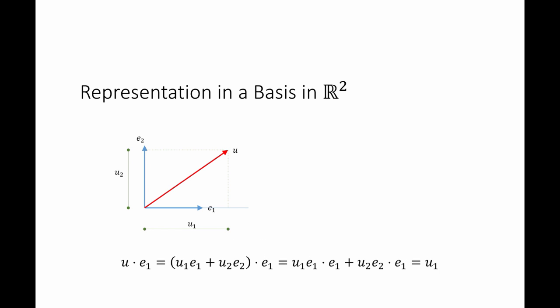You can think of the component u1 as the projection of u on the vector e1. So u dot e1, using the representation u1·e1 plus u2·e2, dotted with e1. Because the dot product is a linear operation, this equals u1·(e1 dot e1) plus u2·(e2 dot e1). Since the basis set is orthonormal, e1 has length 1 and e2 is perpendicular to e1. So the second term vanishes, and I'm left with u1·(e1 dot e1), which equals u1 since e1 dot e1 equals 1.